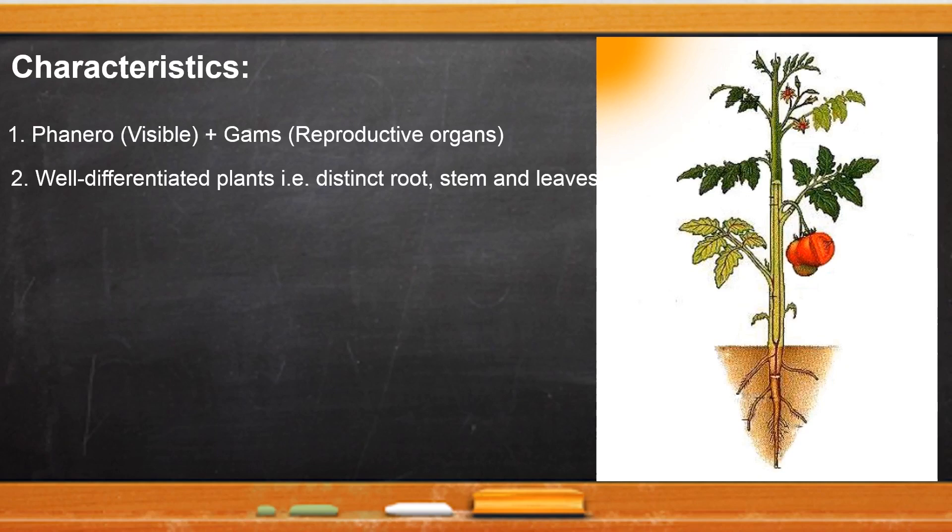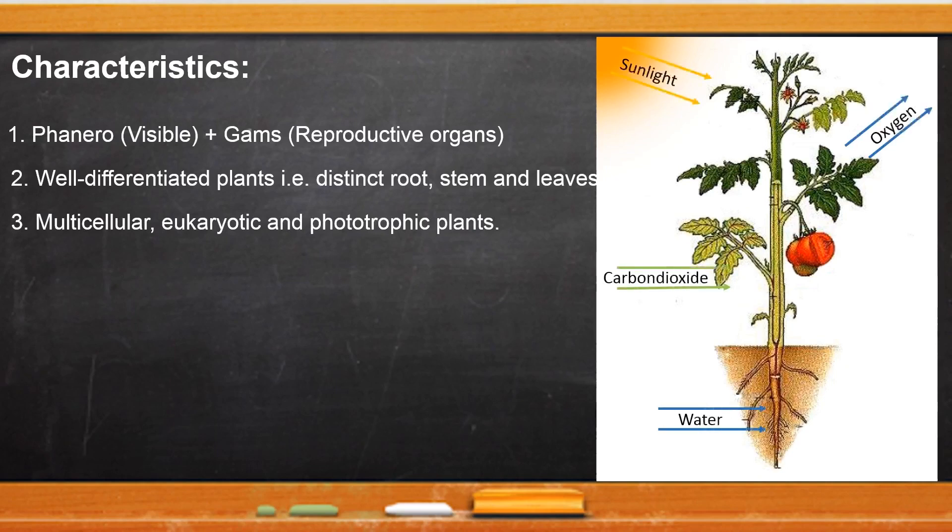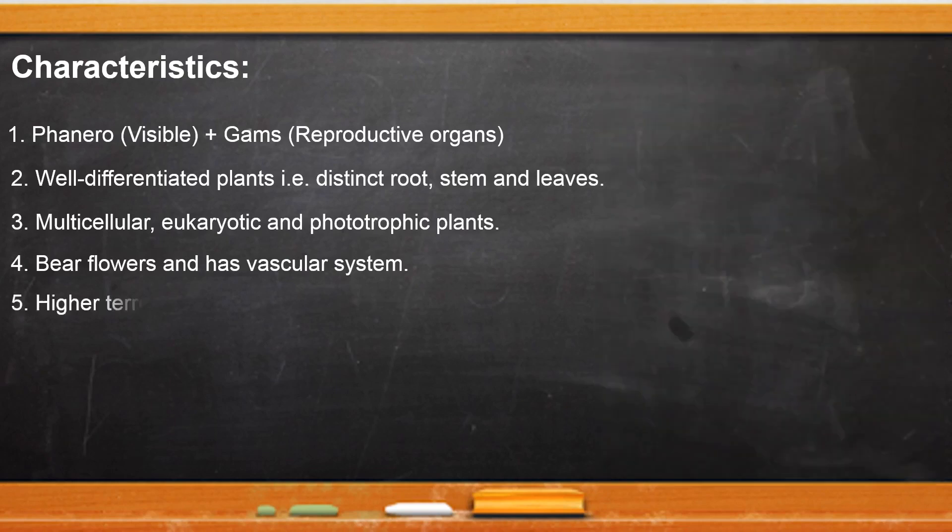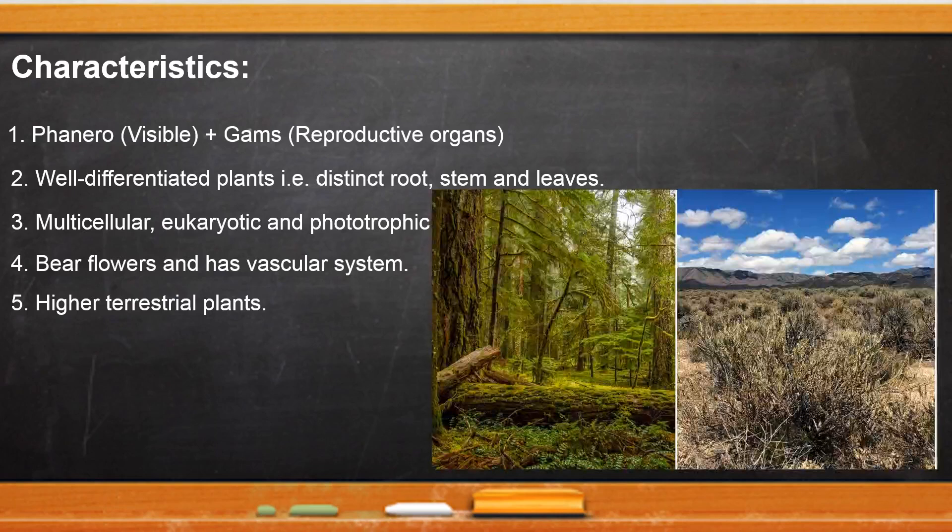Phanerogames are multicellular, eukaryotic, and phototrophic plants which prepare their own food with the help of photosynthesis process. These plants bear colorful flowers and also have complete vascular system to carry water and food. They are called terrestrial plants as they are found on the land.